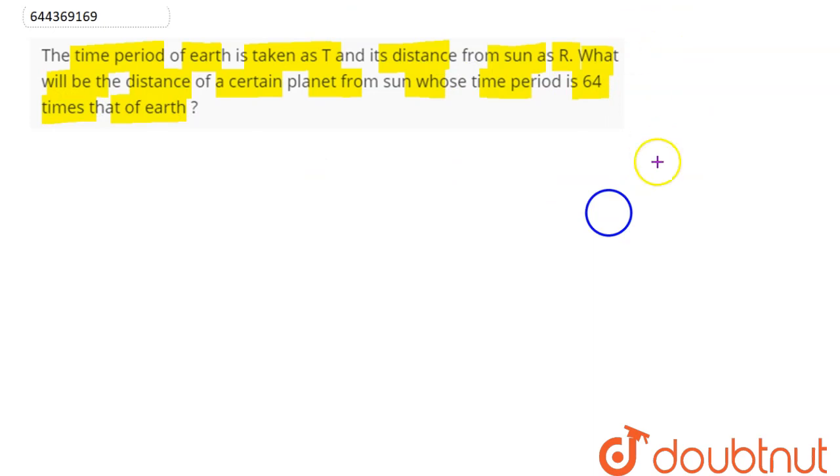Hence we can say, suppose this is the sun, this is Earth, and this is another planet whose distance from the sun is 64 times that of Earth. So this is sun, this is Earth, and this is the planet.